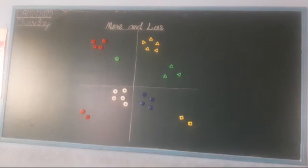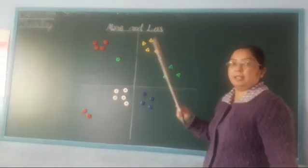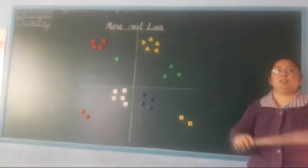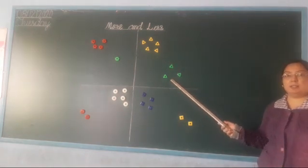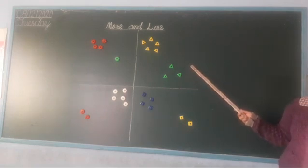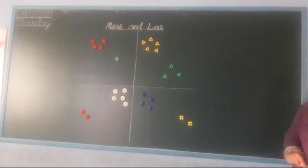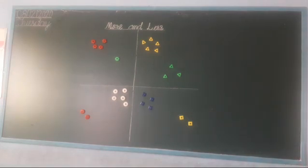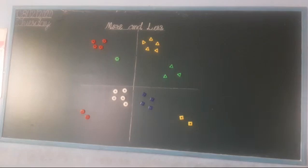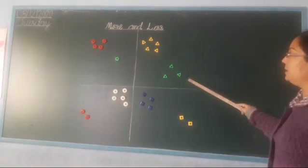Now children, which shape is this? Triangle. And which color is this students? Yellow. Very good. And which shape is this children? Green color. So which one is more and which one is less triangle? Yellow triangles are more and green triangles are less. These are more and this is less — more triangles and less triangles.